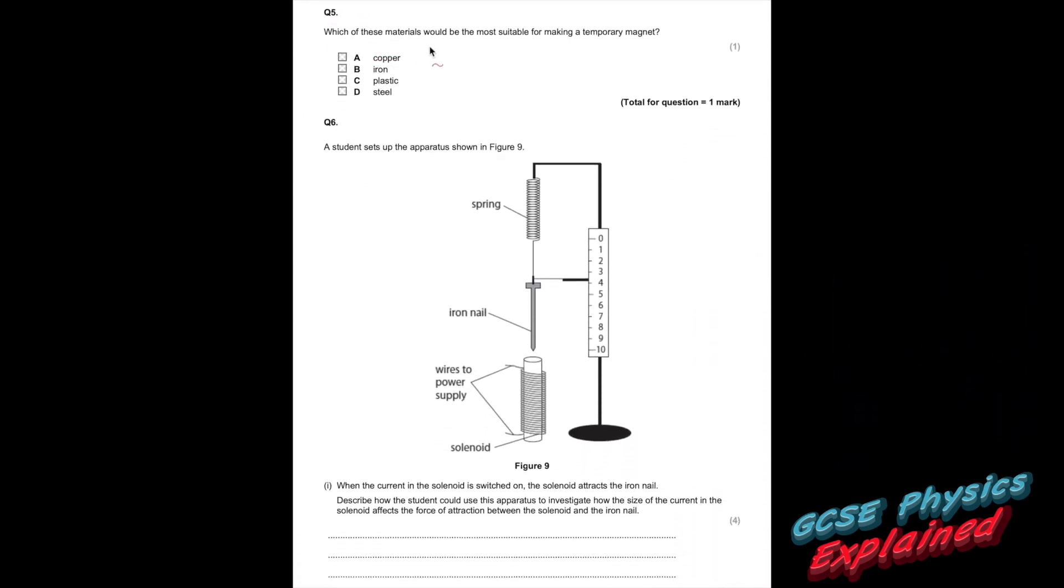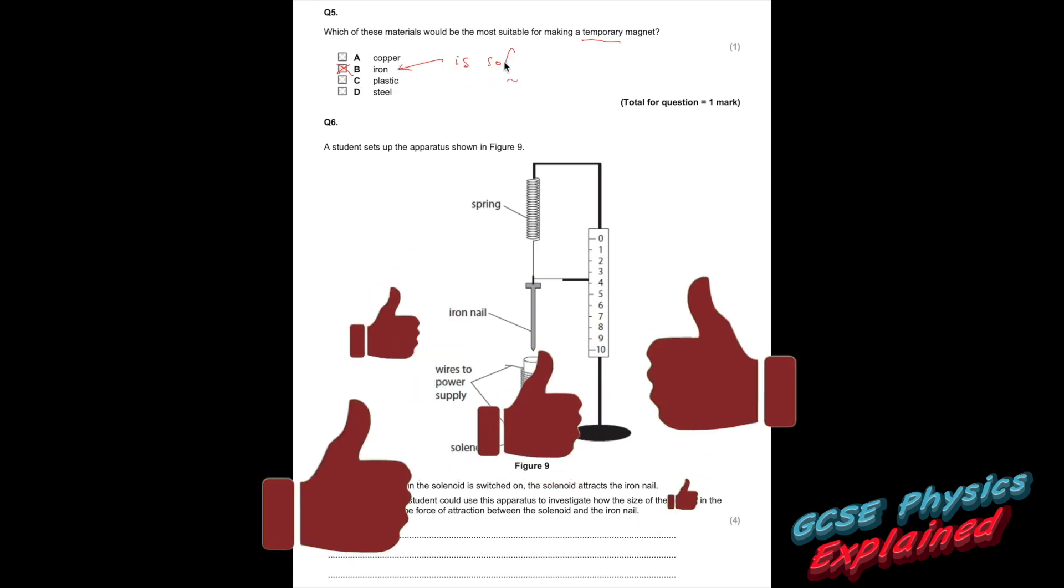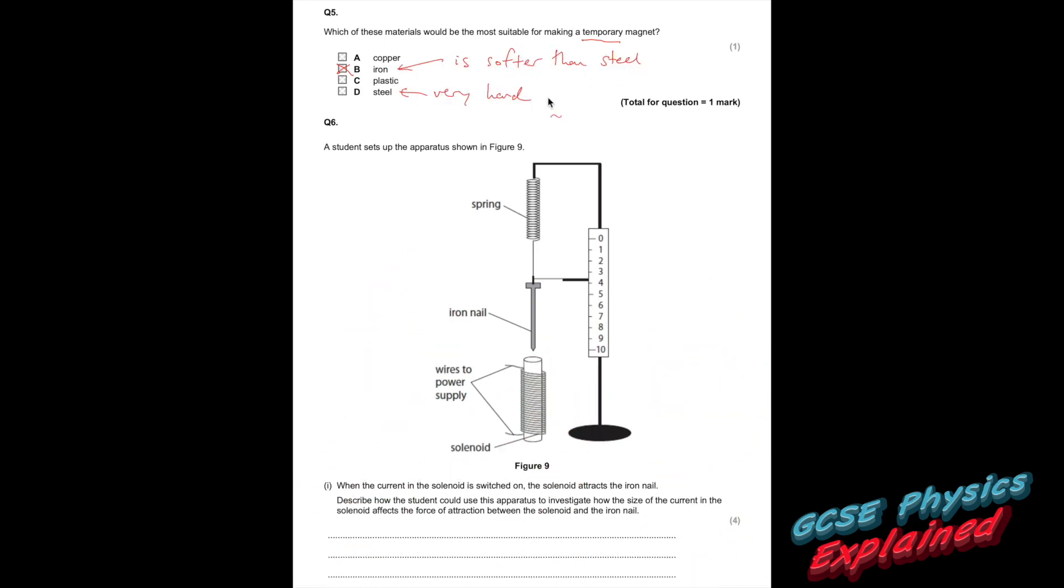Question 5. Which of these materials would be the most suitable for making a temporary magnet? Copper? Well, that's not even magnetic. Iron? Yes. Plastic? That's not even magnetic. Steel? Yes, it is magnetic, but that'll be a permanent magnet. So the answer is iron. Iron is much softer than steel. That's why you can magnetise it, and then demagnetise it. Steel is very hard. It becomes a permanent magnet.